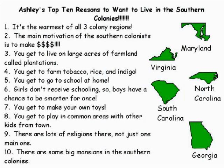Top Ten — basically what they do is pick the top ten reasons to want to do something or not want to do something. 'Top ten reasons to want to live in the southern colonies: the main motivation of the southern colonists is to make money; girls don't receive schooling, so boys have a chance to be smarter for once; there are some big mansions in the southern colonies.' You can get a little picture of who Ashley is — money, big mansions, and boys get to be smarter than girls for once. This is where you're asking them to do those Marzano strategies of summarizing, pulling out the important information, taking what's really the most important.